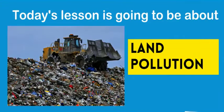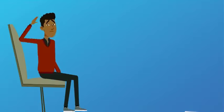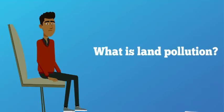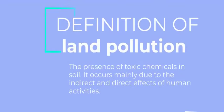Today's lesson is going to be about land pollution, and this is going to be the last lesson about the theme of pollution. But do we even know what land pollution is? Land pollution means the presence of toxic chemicals in soil. It occurs mainly due to the indirect and direct effects of human activities.